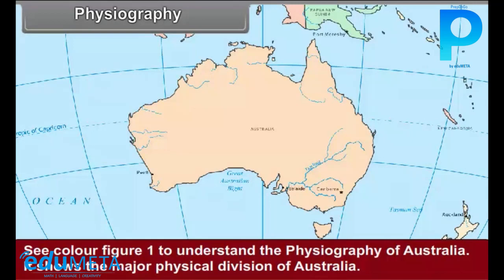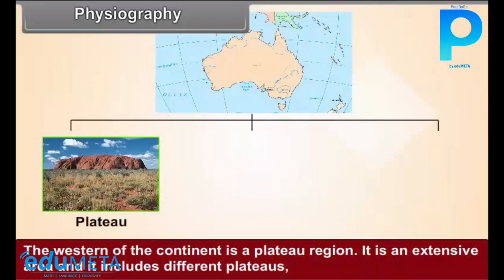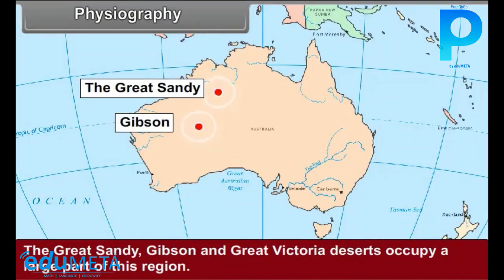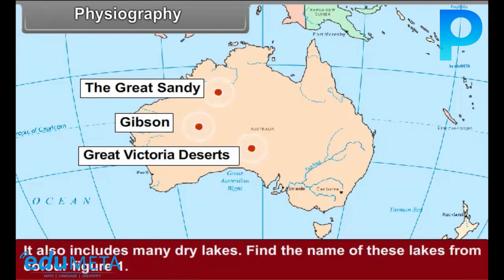Physiography: To understand the physiography of Australia, it shows the major physical divisions of Australia. The western part of the continent is a plateau region. It is an extensive area and it includes different plateaus, deserts, and mountain ranges. The Great Sandy, Gibson, and Great